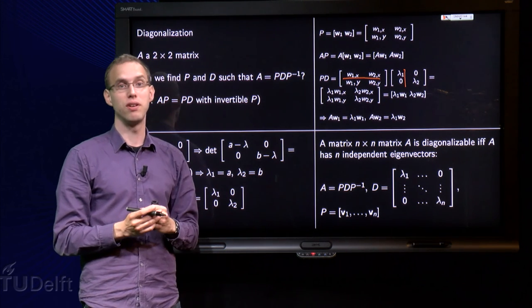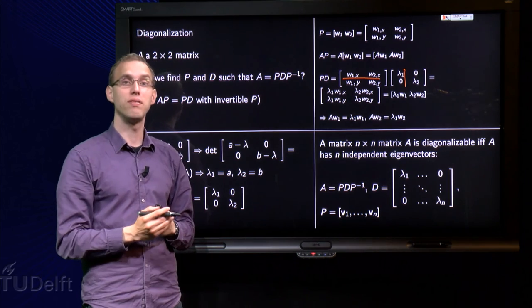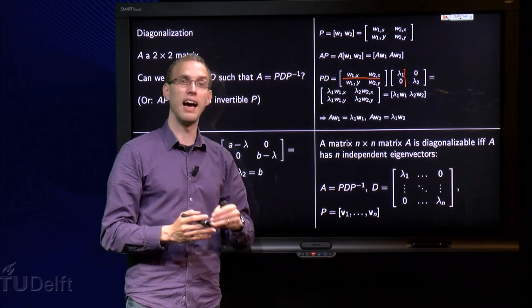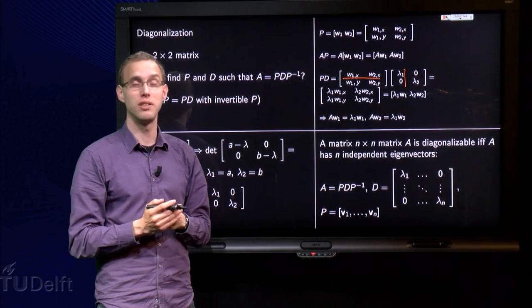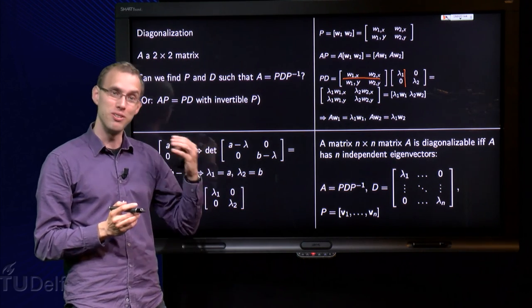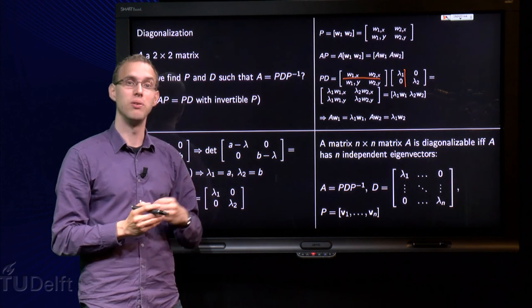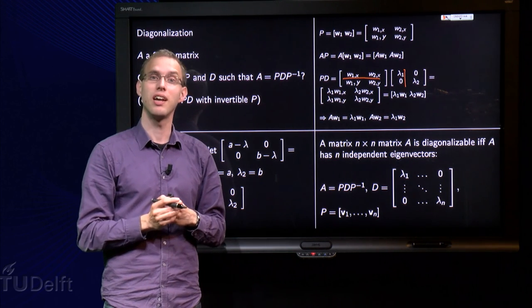Find the eigenvalues of A. Find the corresponding eigenvectors. If you have enough eigenvectors you can find P and D, and A is diagonalizable. If you don't have enough independent eigenvectors, then A is not diagonalizable.